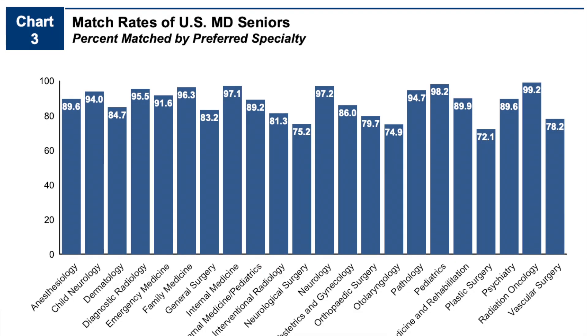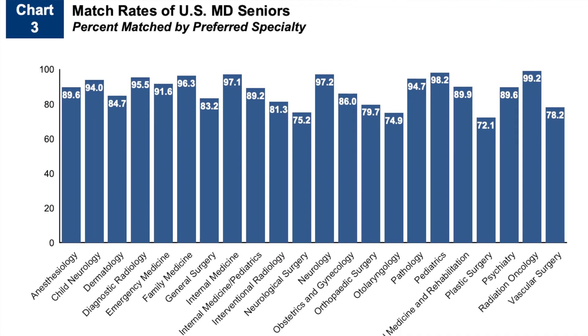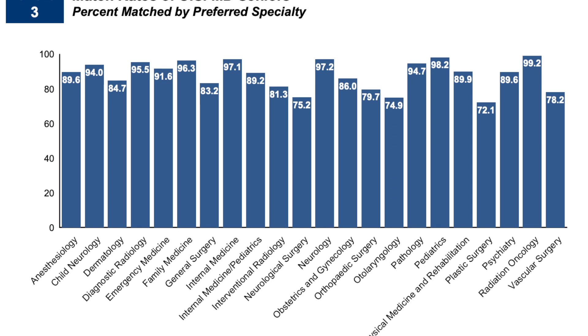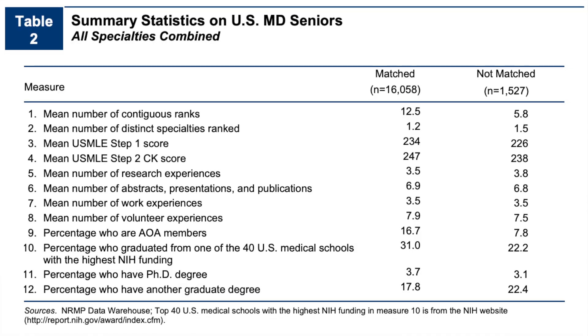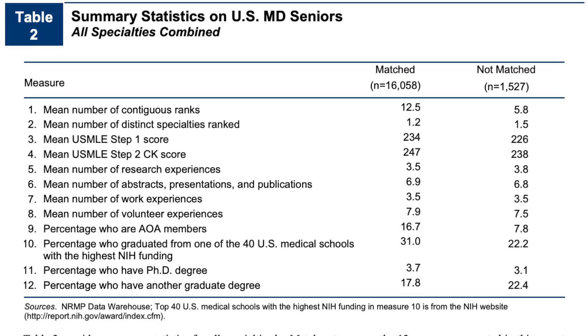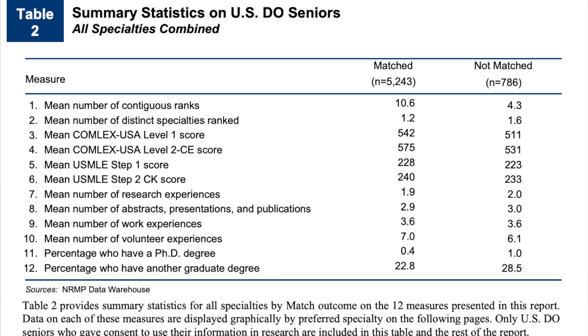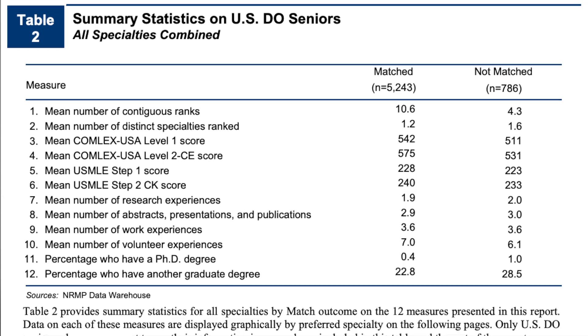MD schools do have slightly higher average GPA and MCAT scores compared to DO schools, which makes them more competitive and ultimately more prestigious. More prestige means that an MD student might have less difficulty getting into a highly competitive specialty like plastic surgery or ophthalmology. These hyper-competitive specialties tend to require lots of research publications, and generally speaking MD schools have better funded and more robust research departments compared to DO schools — but it's not impossible to do research at DO schools. Plenty of DOs still match into competitive specialties.